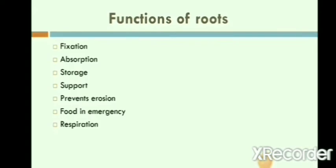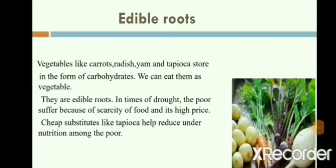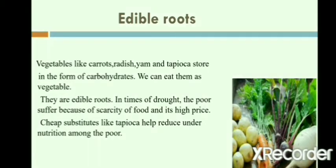Respiration: in some trees, the roots grow upward from the soil. These roots have tiny holes in them which help in respiration. Edible roots: we eat edible roots as vegetables. For example, carrot, radish, yam, etc. They store food in the form of carbohydrates. Carbohydrates give us energy.